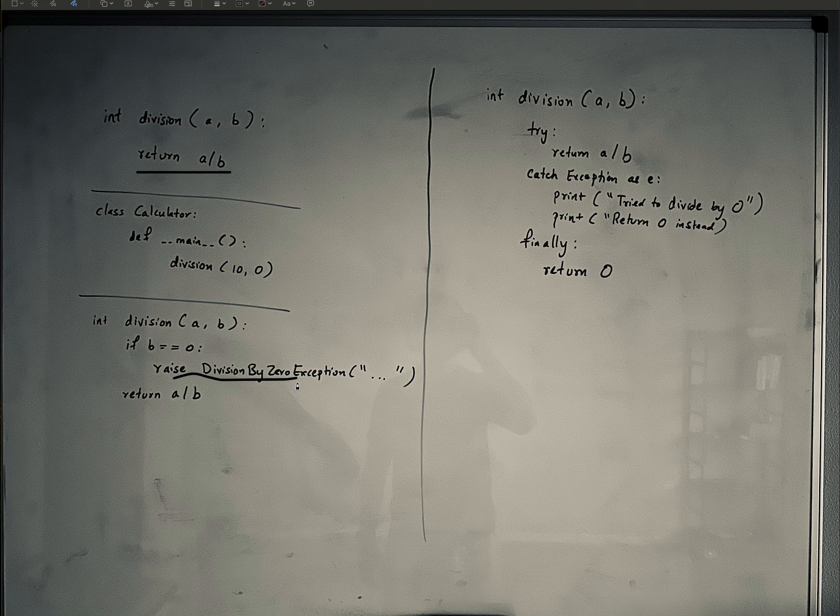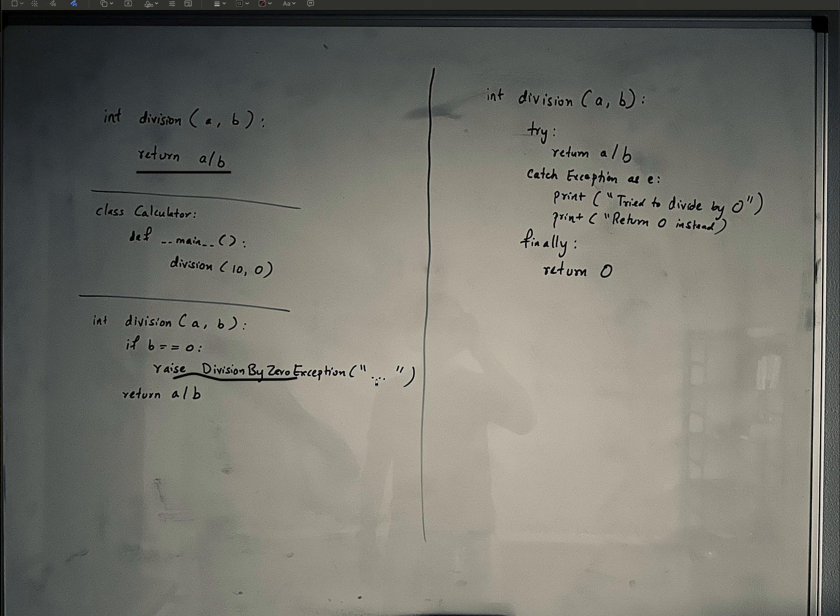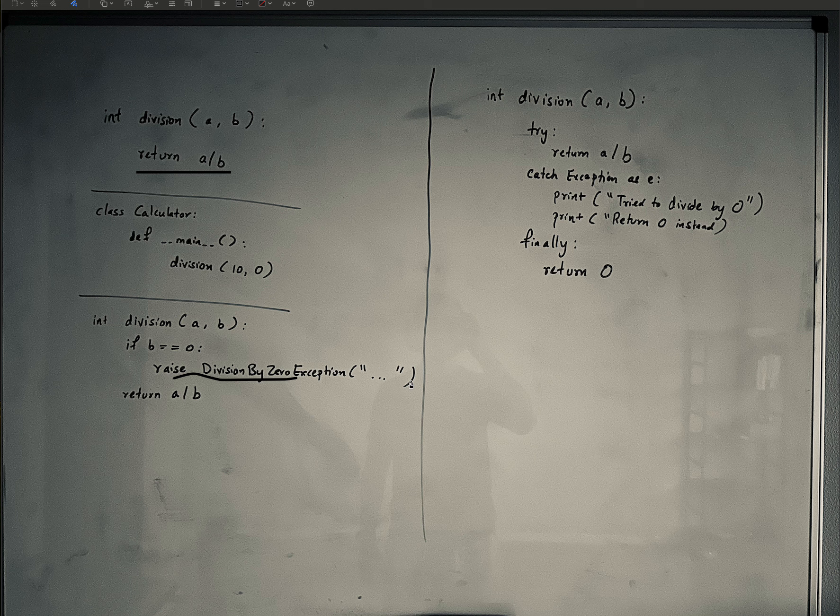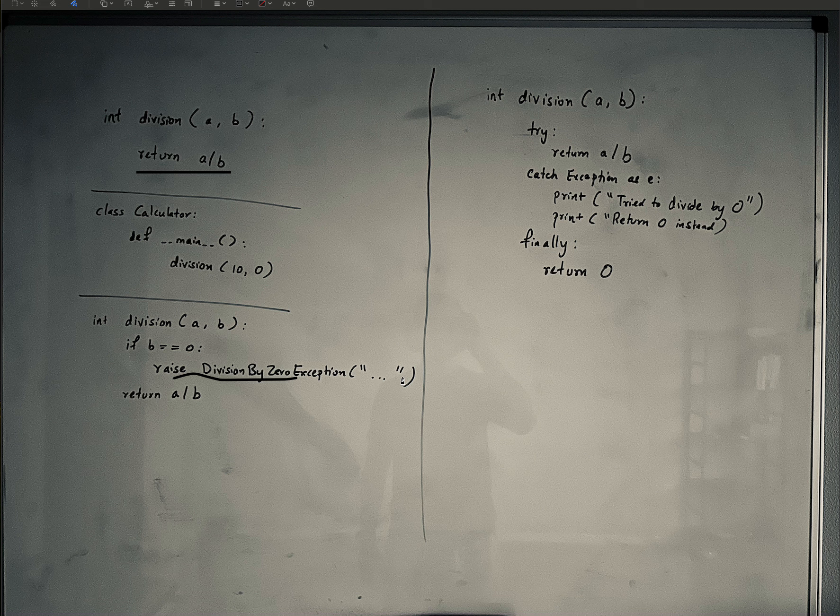When you raise this exception, the way you do it is by writing raise division by zero exception, and then in the parameters, you would say divided by zero. And then your error message, when you raise it, will show that divided by zero.